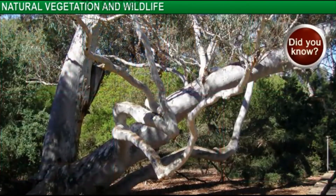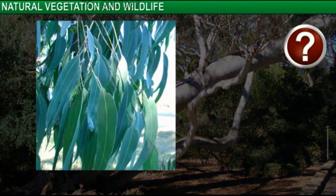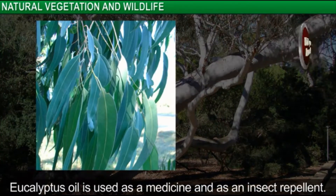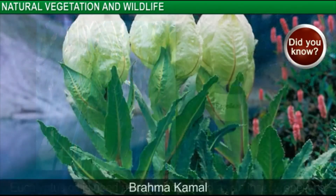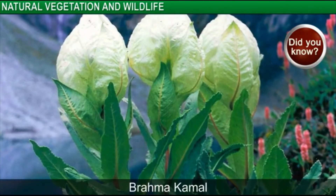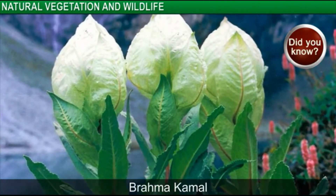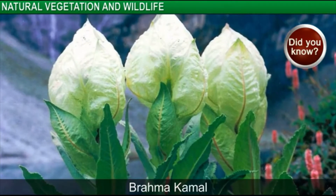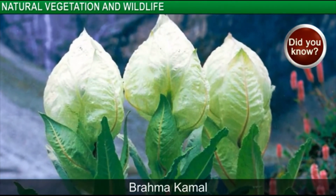Did you know? Oil obtained from the eucalyptus tree is used as a medicine for colds and as an insect repellent. Even the Brahma Kamal plant, found in the Himalayas, has medicinal uses as per Tibetan medicine. It is used as a cure for paralysis.